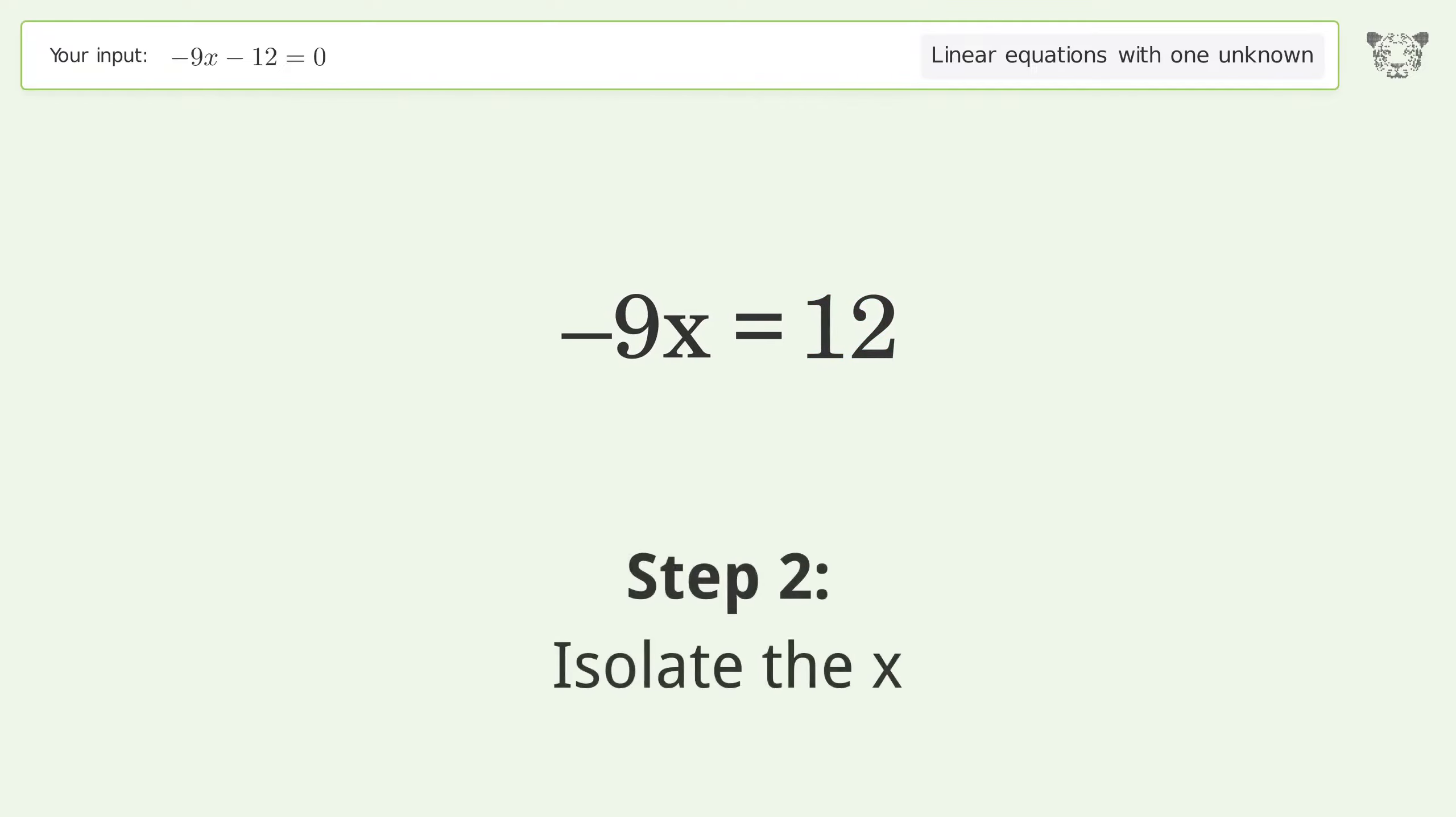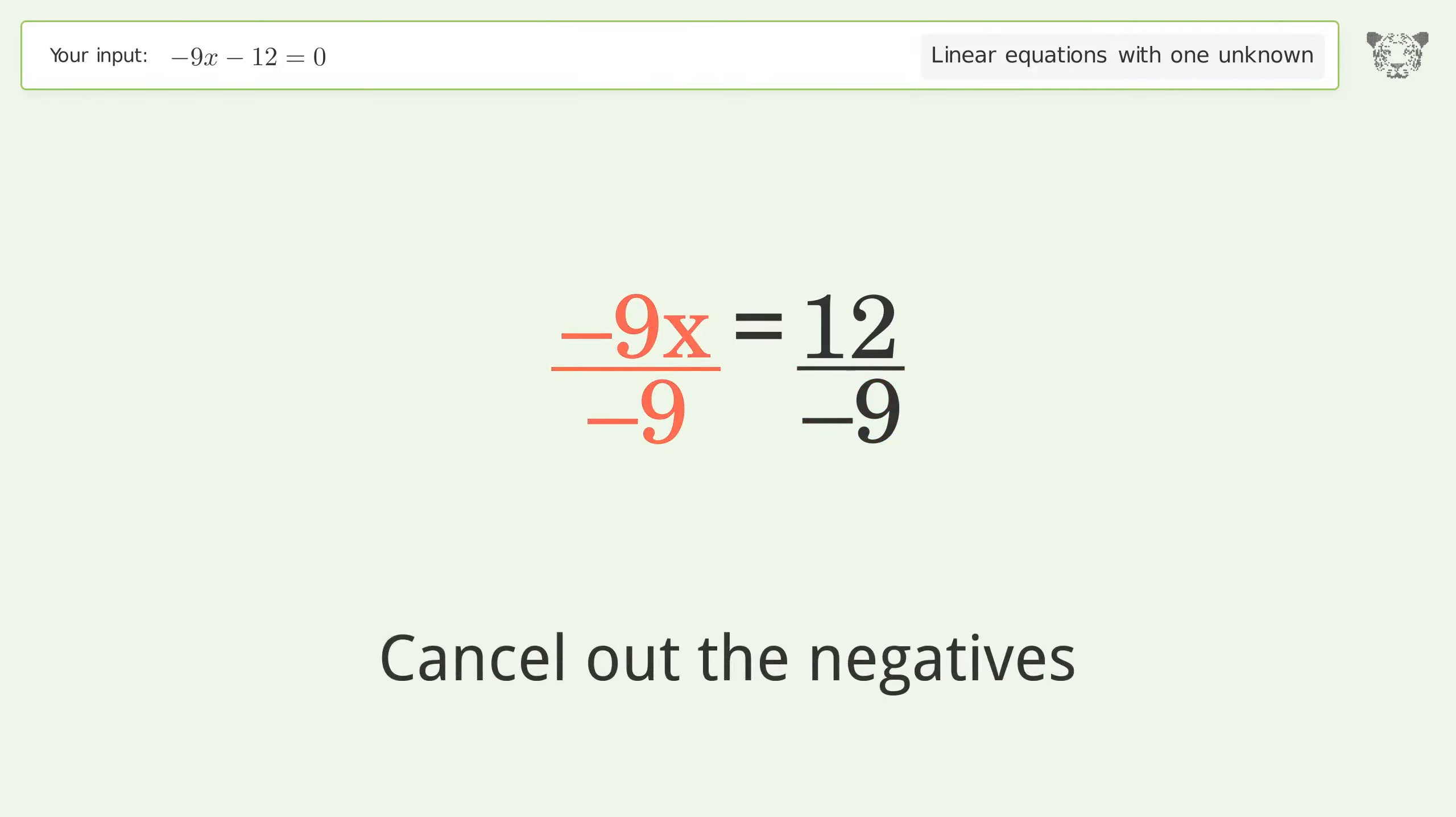Isolate the x. Divide both sides by negative 9. Cancel out the negatives.